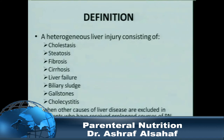There is no clear single definition of TPN or parental nutrition-associated liver disease, but it is a heterogeneous group of side effects. It starts with cholestasis, progresses to steatosis, fibrosis, cirrhosis, and liver failure. There is also biliary sludge, cholestasis, stones, and sometimes cholecystitis. It should be a diagnosis by exclusion — we have to rule out other liver diseases, and then the final diagnosis will be intestinal failure or TPN-associated liver disease.